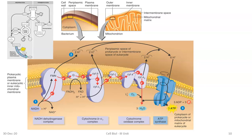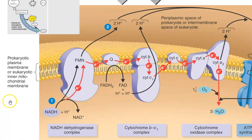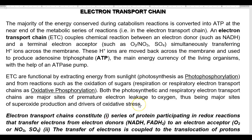The electron transport chain is present in the inner membrane of the mitochondria. In eukaryotes, the electron transport chain operates in the mitochondrion inner membrane. However, in bacteria it will be present in the plasma membrane. So prokaryotes carry the electron transport chain in the plasma membrane, whereas the inner mitochondrial membrane is the location in eukaryotes.